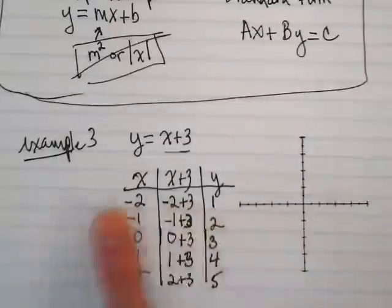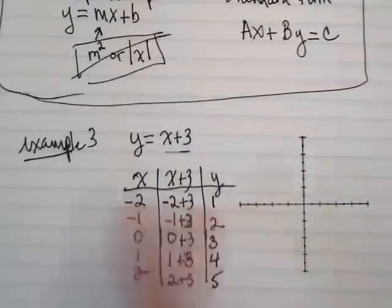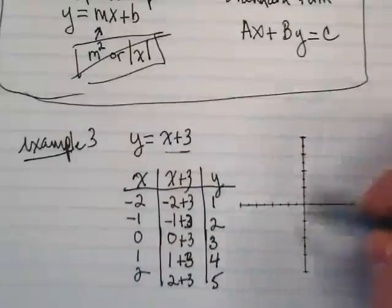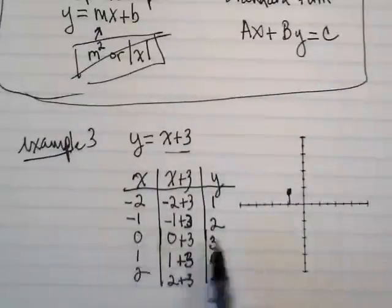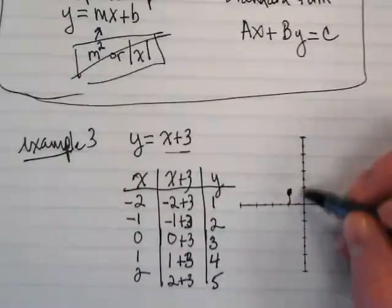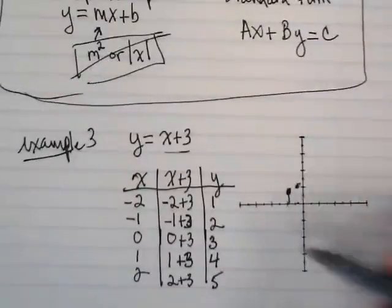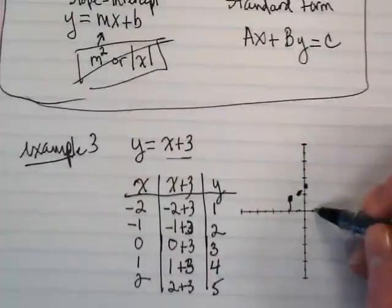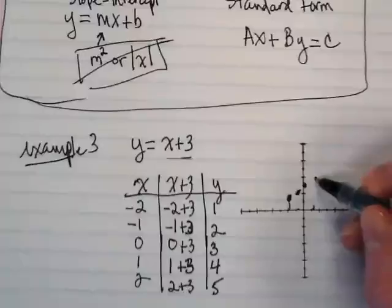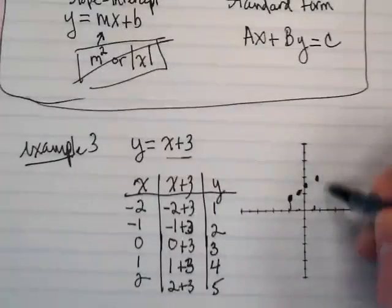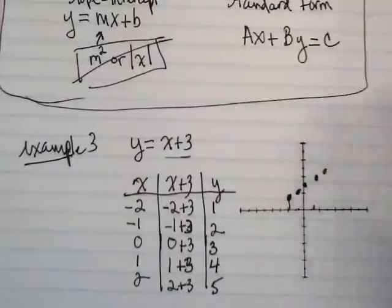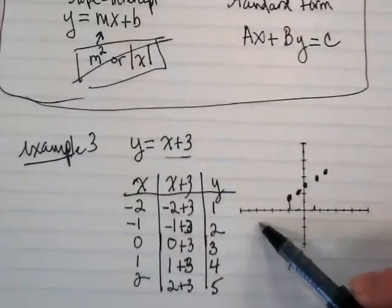And then we can graph those. Negative 2, 1. That's our ordered pair. Negative 2, 1 would be here. Negative 1, 2 would be here. Negative 2 plus 3, 0 and 3, 1 and 4, and 2 and 5. And I get my straight line.